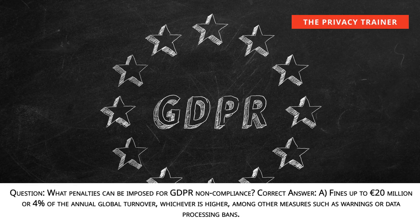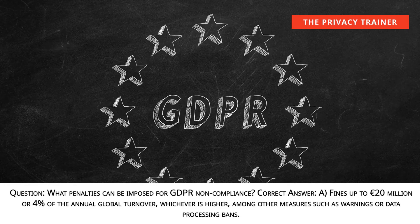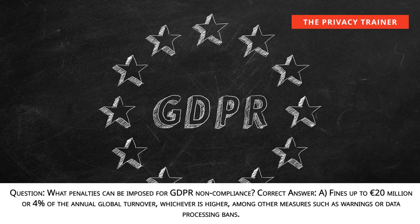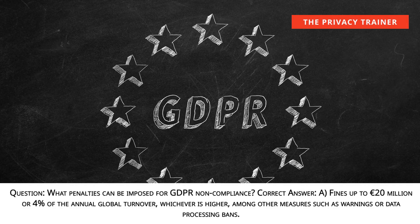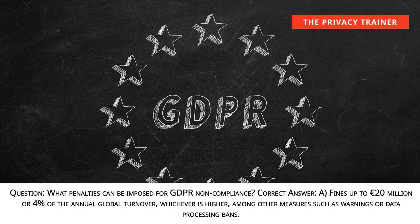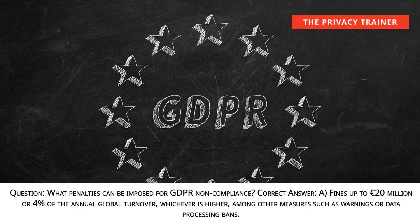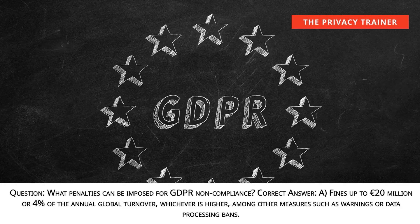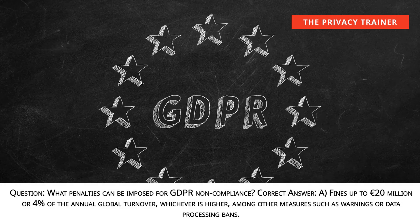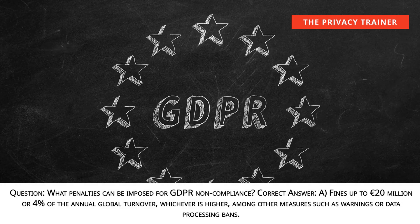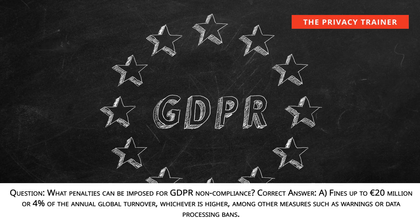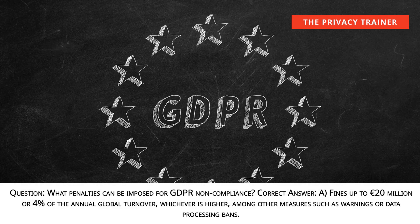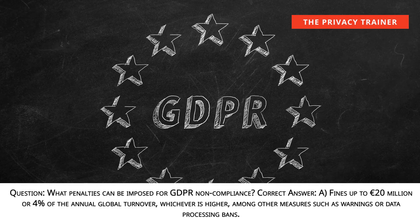Question: What penalties can be imposed for GDPR non-compliance? Answer A: Fines up to 20 million euros or 4% of the annual global turnover, whichever is higher, among other measures such as warnings or data processing bans.